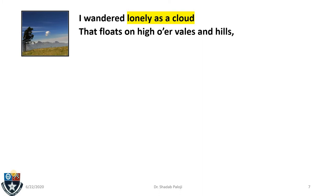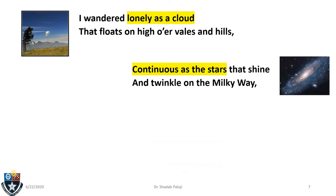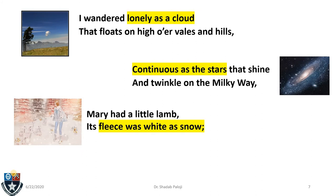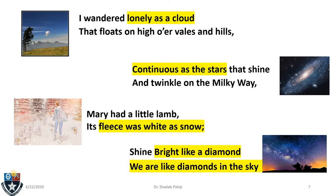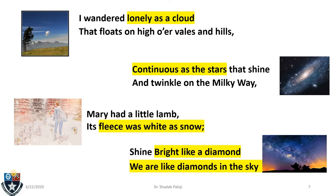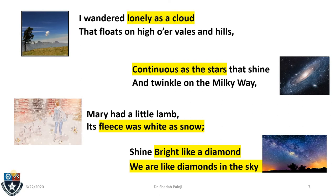A very famous line from a very famous poem that all of us studied as children — Daffodils by William Wordsworth: 'I wandered lonely as a cloud that floats on high o'er vales and hills.' Look at another statement: 'Continuous as the stars that shine and twinkle on the Milky Way.' Mary had a little lamb — its fleece was white as snow. Shine bright like a diamond — we are like diamonds in the sky, the famous line from a song sung by Rihanna.